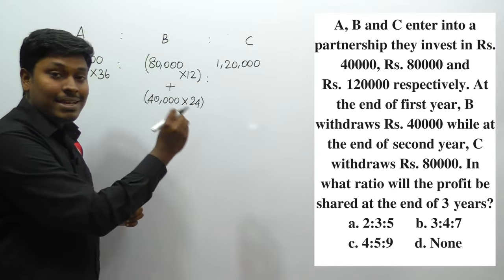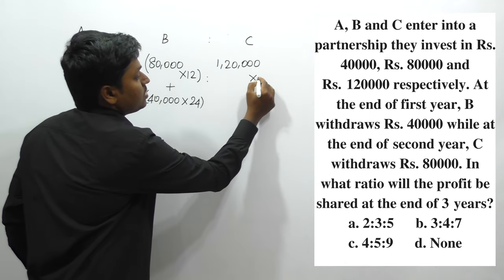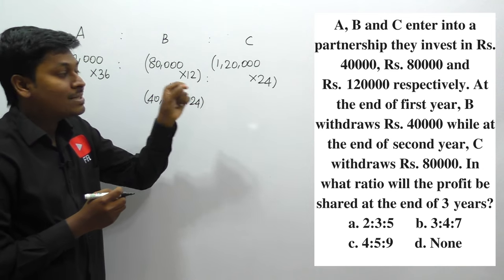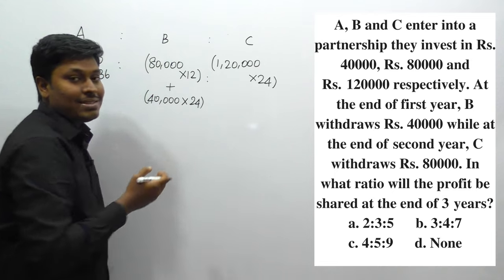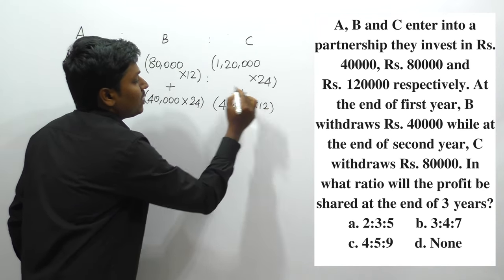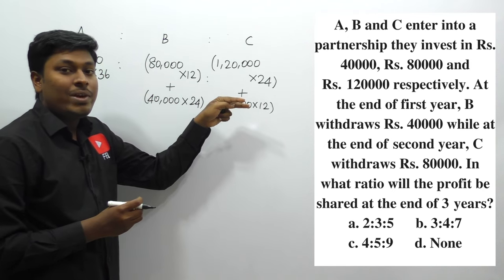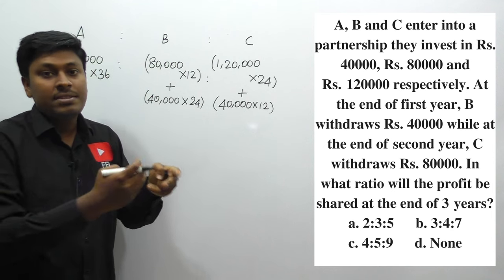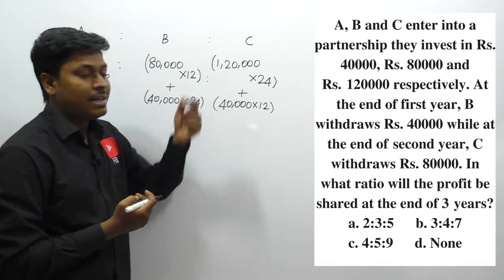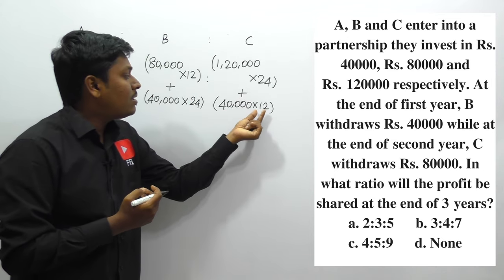For C: C withdraws 80,000 at the end of the second year. So for the first two years, that is 24 months, C invests 1,20,000. After withdrawing 80,000, the remaining is 40,000, which C invests for the remaining 12 months. So C's investment is 1,20,000 × 24 plus 40,000 × 12.